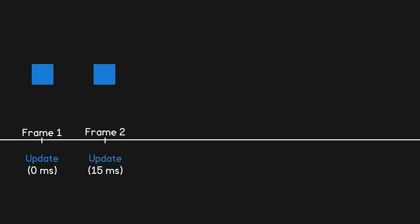Now imagine that the framerate drops and the next frame is drawn 65ms later. The object obviously needs to move a lot further between frames 2 and 3 than between frames 1 and 2, since more time has passed. This is why we always multiply our object's velocity by delta time — the time between frames.